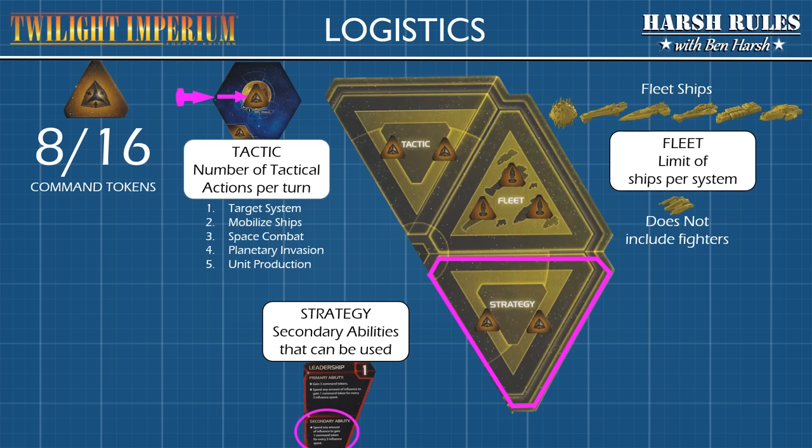We will learn about the primary and secondary ability on strategy cards in just a moment. But first, some final notes on Command Tokens and the Tactic, Fleet, and Strategy spaces on the Command Sheet. Remember, each player can only have a maximum of 16 Command Tokens in play. During the status phase, Command Tokens can be redistributed to these three Command Sheet spaces to fulfill a player's strategy.